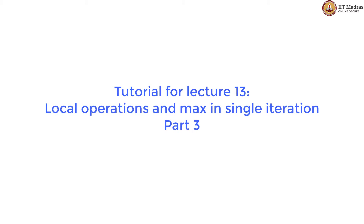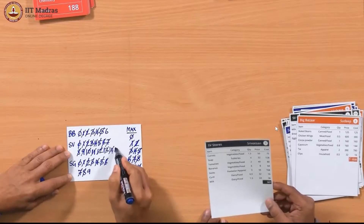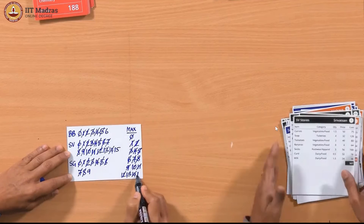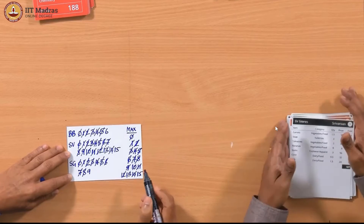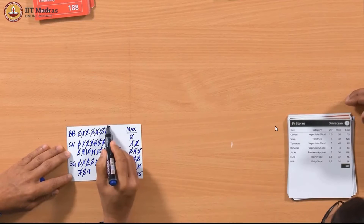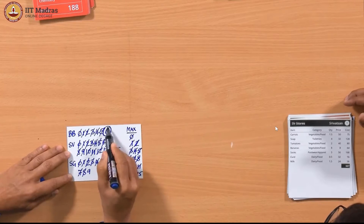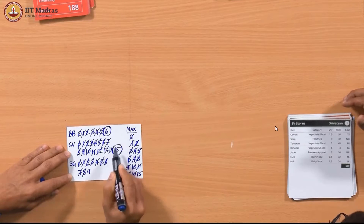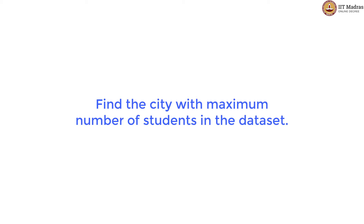Hello computational thinking students. In this tutorial, we are going to look at a procedure which is very similar to what the professors have done in lecture 13, which is to find the store with the maximum number of bills. For our tutorial, we will look at the problem where we find the city with the maximum number of students in the scorecard dataset.